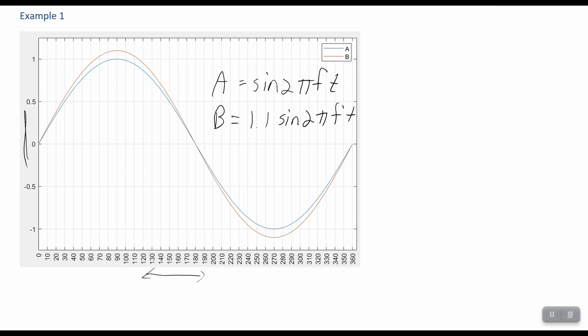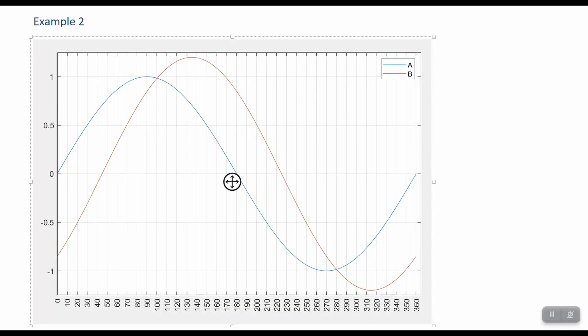That one's pretty straightforward. Example 2 here, again, amplitude y-axis, phase in the x-axis. And we can see that they each reach a peak at a different time. Signal A, which is the blue one, crosses the zero-axis at time zero here at point zero. And signal B crosses the zero point of the y-axis a little bit later.